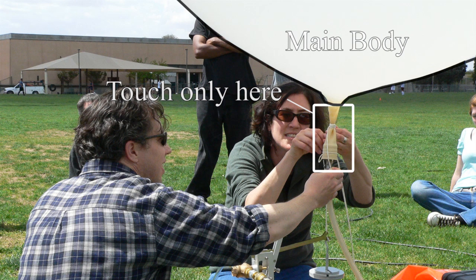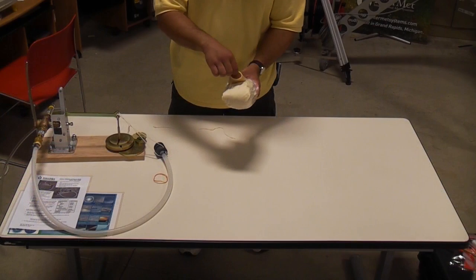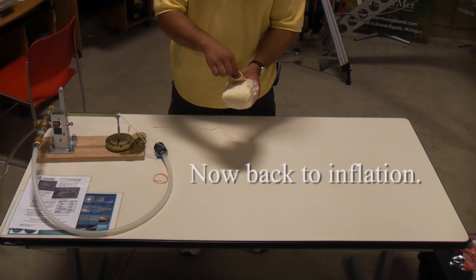If the main body of the balloon is touched, dirt or oils from your hand will contaminate the surface of the balloon. When the balloon ascends past the freezing level, the oils from your hand will freeze, causing that spot on the balloon to stop expanding. Other parts of the balloon will have to expand more, causing the balloon to burst at a lower altitude.